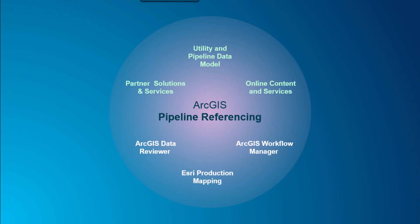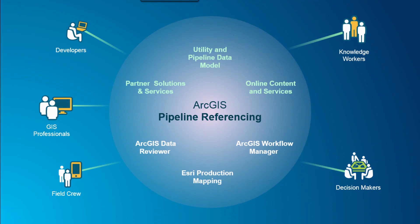Users can configure the Utility and Pipeline Data Model with ArcGIS Pipeline Referencing. UPDM is Esri's new data model that can hold data for gathering, transmission, and distribution pipelines — all three types within one unified data model. Once the entire linear referencing system is built alongside online content and services and business partner solutions, it can all be exposed at the enterprise level and shared across the pipeline organization.